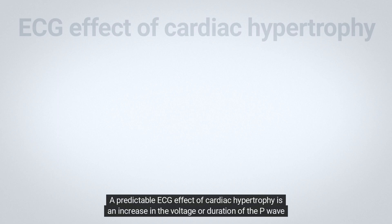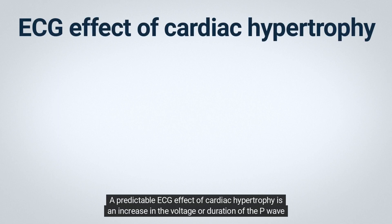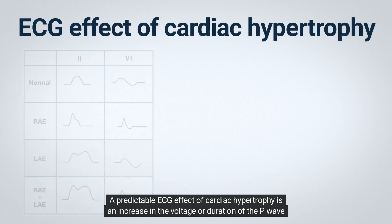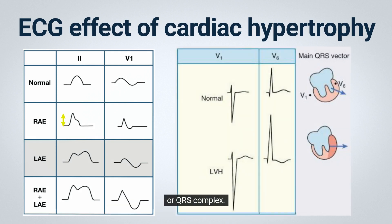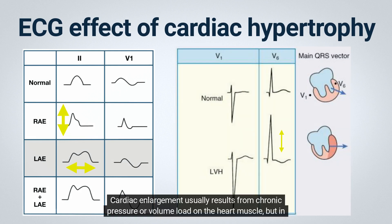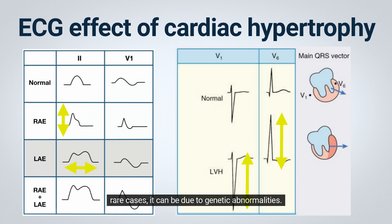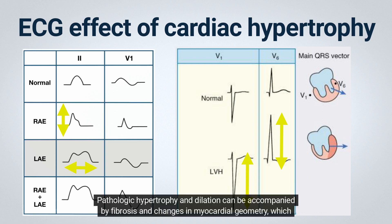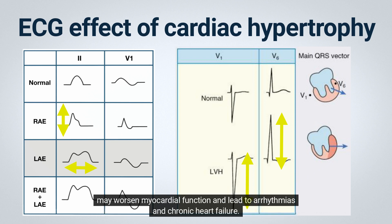A predictable ECG effect of cardiac hypertrophy is an increase in the voltage or duration of the P-wave or QRS complex. Cardiac enlargement usually results from chronic pressure or volume load on the heart muscle, but in rare cases it can be due to genetic abnormalities. Pathologic hypertrophy and dilation can be accompanied by fibrosis and changes in myocardial geometry, which may worsen myocardial function and lead to arrhythmias and chronic heart failure.